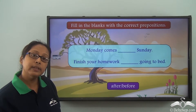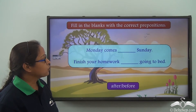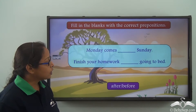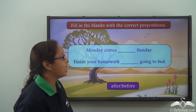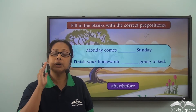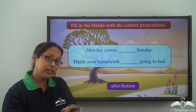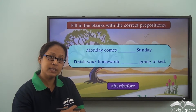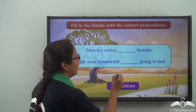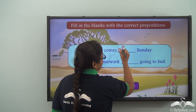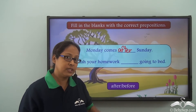Now let's fill in the blanks with the correct prepositions — 'after' or 'before'. First: Monday comes dash Sunday. When we look at the days of the week, Sunday comes first, then Monday. Monday comes later on, so we use 'after'. Monday comes after Sunday.